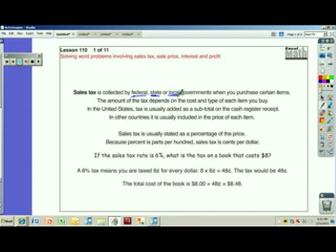In the United States, tax is usually added as a subtotal on the cash register receipt. In other words, on your receipt it says, let's say you're buying a shirt, it's got the shirt here, it says 9.99, and then it'll say tax as a separate thing right here where it'll say 87 cents or whatever. And then it's called a subtotal.